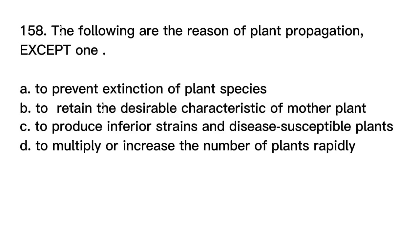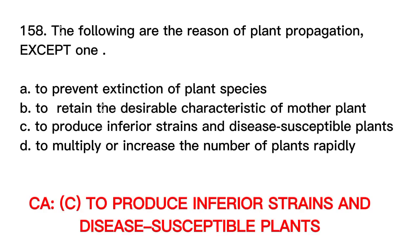Number 158. The following are the reasons for plant propagation, except one. A. To prevent extinction of plant species. B. To retain the desirable characteristics of the mother plant. C. To produce inferior strains and disease-susceptible plants. D. To multiply or increase the number of plants rapidly. Correct answer is letter C. To produce inferior strains and disease-susceptible plants.